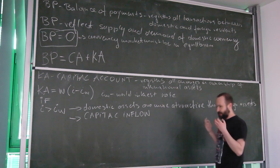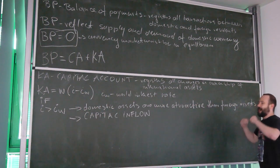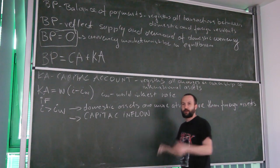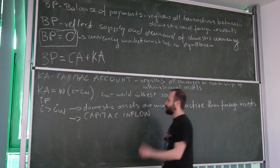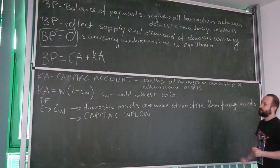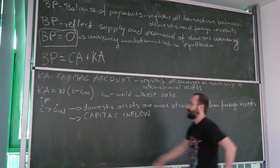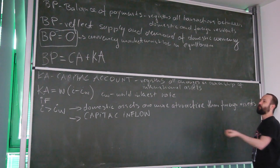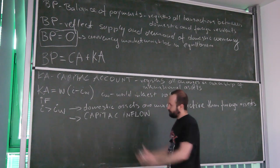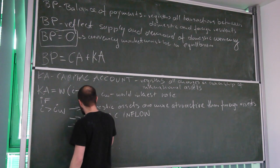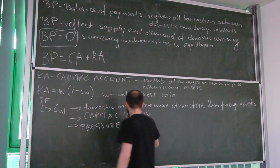Foreigners want to purchase our assets. Our assets are denominated in our currency — Polish bonds are denominated in Polish zloty, American bonds are denominated in dollars. So foreigners need to exchange their currency for our currency. There is higher demand for our currency — higher demand, same supply — so the price should go up, leading to appreciation.